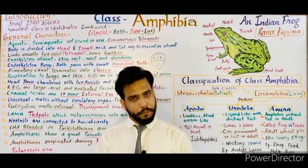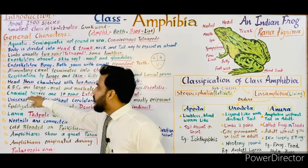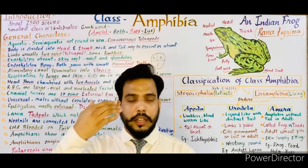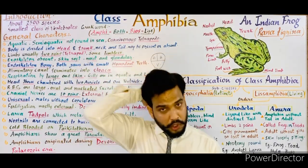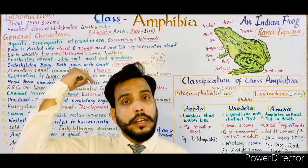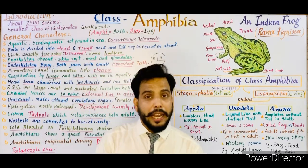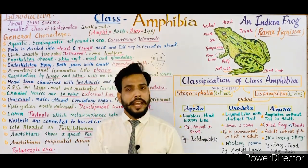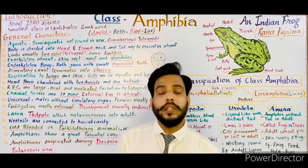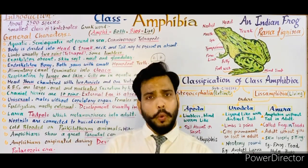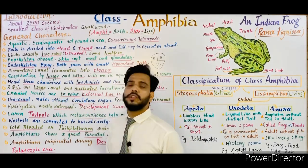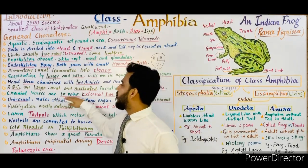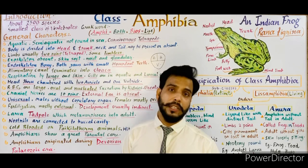Cranial nerves are the nerves present inside the cranium — the posterior part of the skull that protects the brain. These include nerves connecting the eyes and ears to the brain. In amphibians, there are 10 pairs of cranial nerves in total.